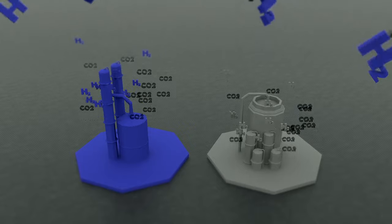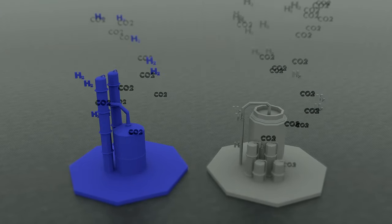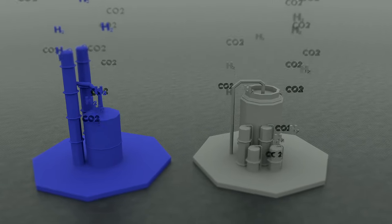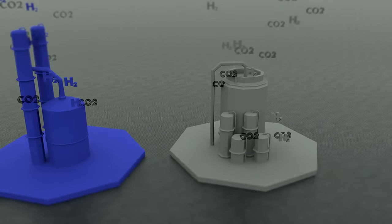Two of the commonly referenced colours are grey and blue. Grey hydrogen is produced from natural gas, creating damaging CO2 in the process.